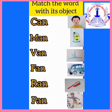The first word is C, A, N — can. Can. Children, find out where is the can. Yes, the can is in the second place in the picture. Match the can with the picture.